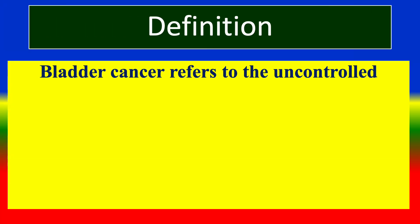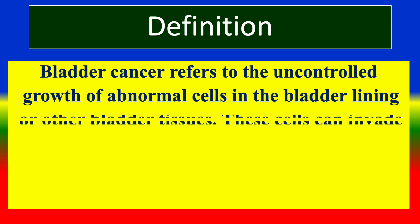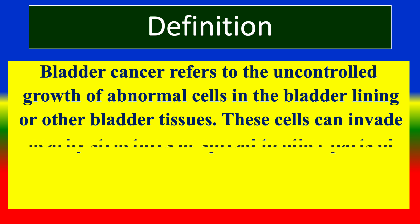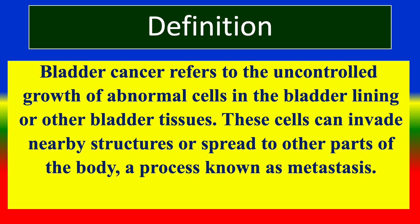Definition: Bladder cancer refers to the uncontrolled growth of abnormal cells in the bladder lining or other bladder tissues. These cells can invade nearby structures or spread to other parts of the body, a process known as metastasis.